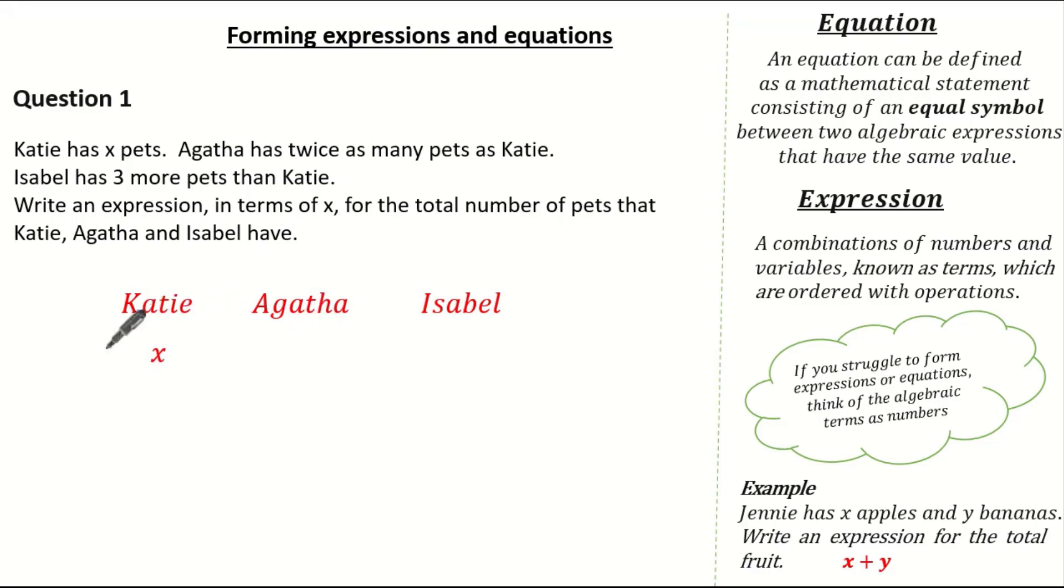Now Agatha has twice as many pets as Katie. So if Katie has x, that means Agatha has 2x. Now Isabel has three more pets than Katie, so Katie has x and Isabel has three more, so we must add 3 to the x. Now because the question wants us to find the total number of pets, we simply add x plus our 2x plus our x plus 3. Therefore the expression for the total pets is simply 4x add 3.